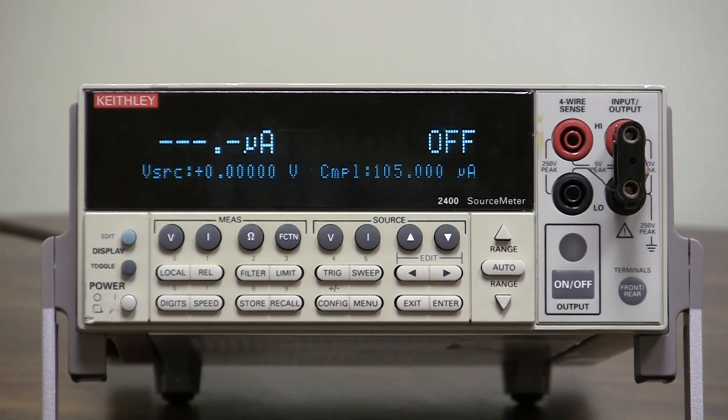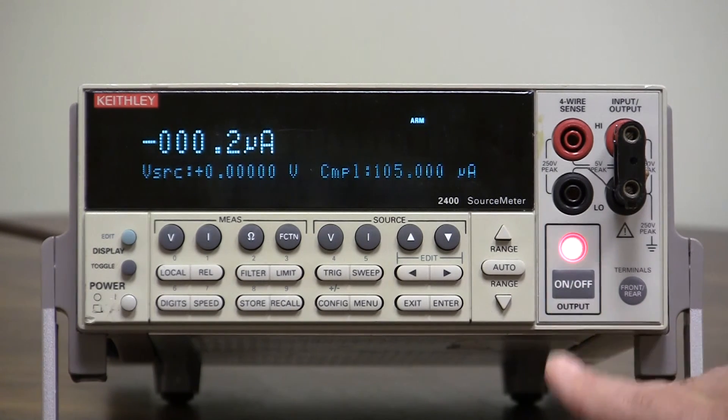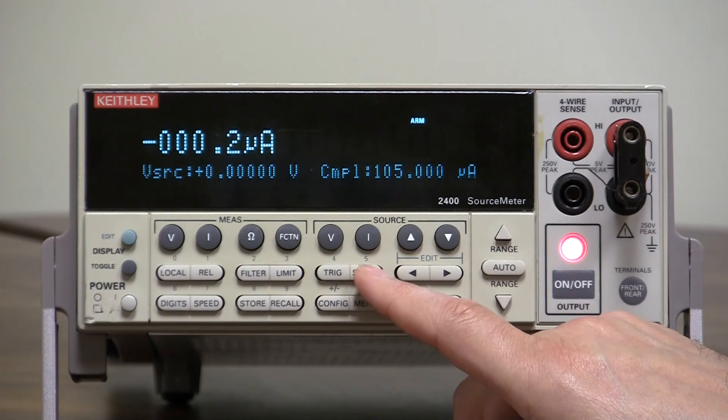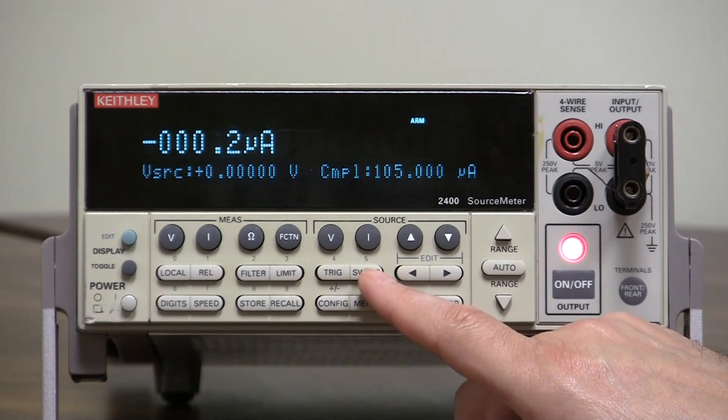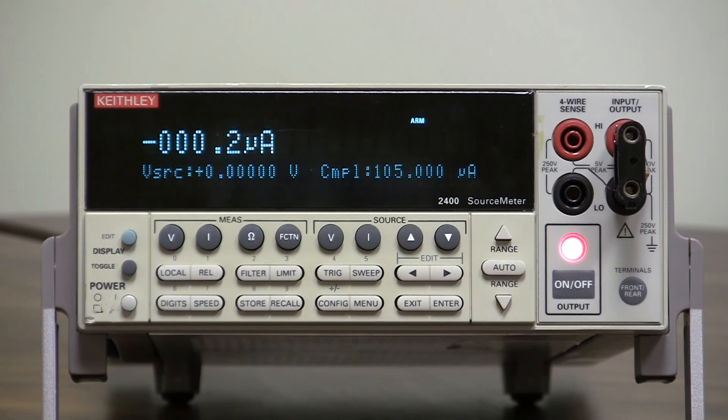To run the sweep all we need to do is turn on the output and then hit the sweep button. Now it will go very fast but we will recall the data and see where we're at. That was it, that's how fast it was.